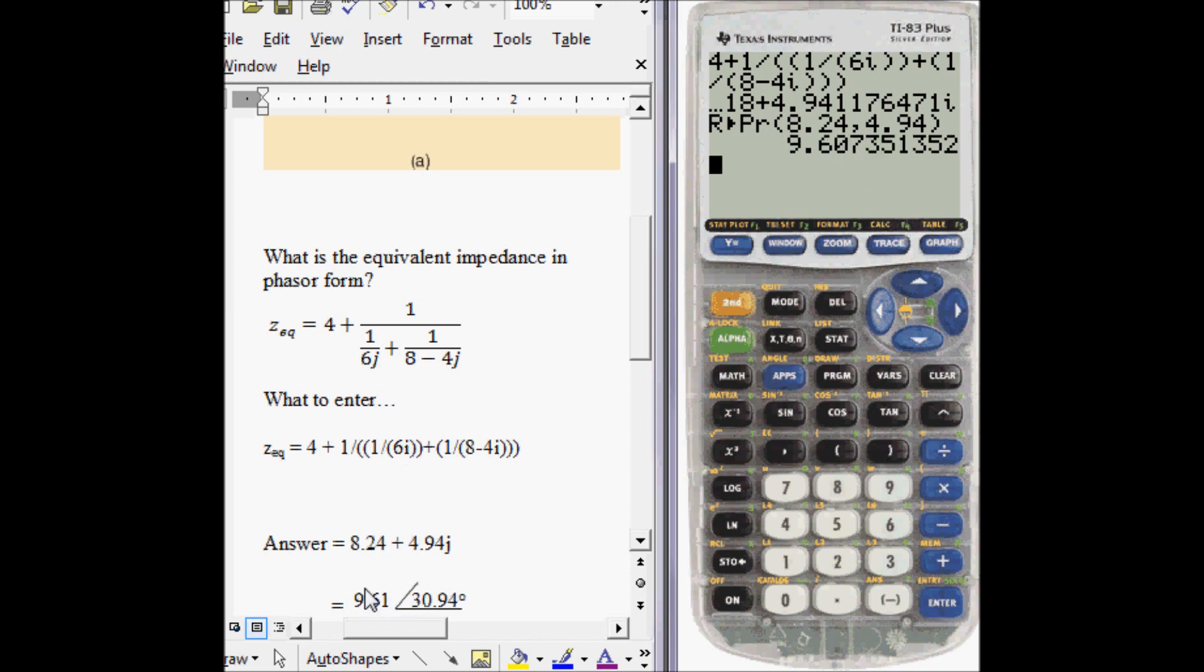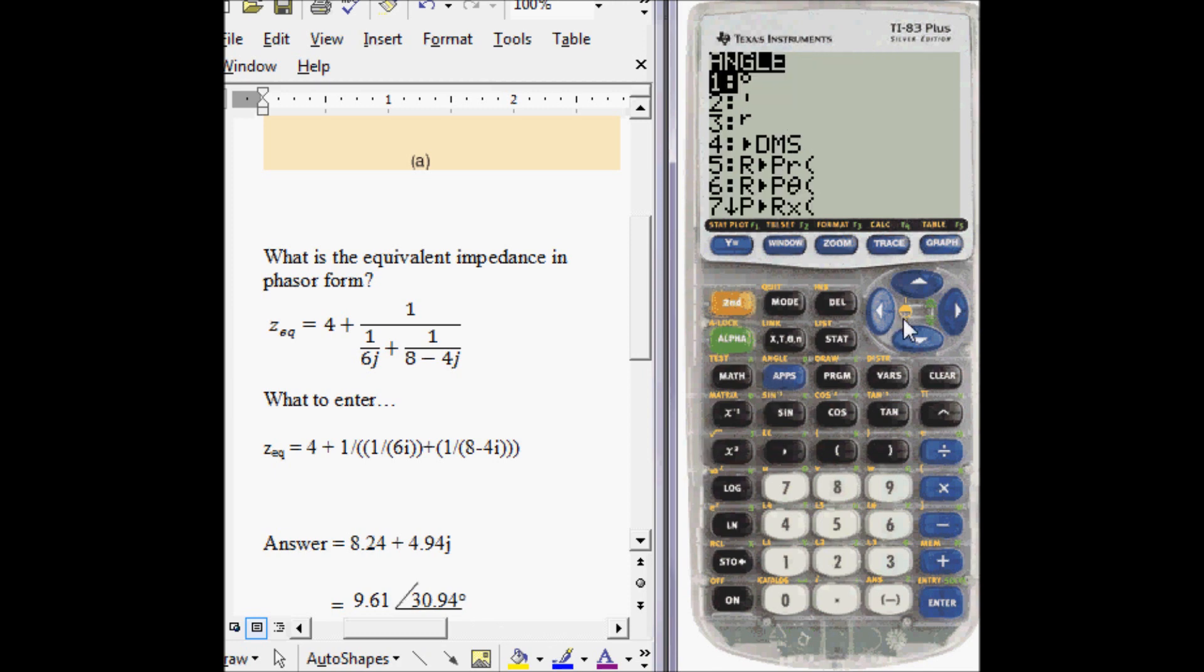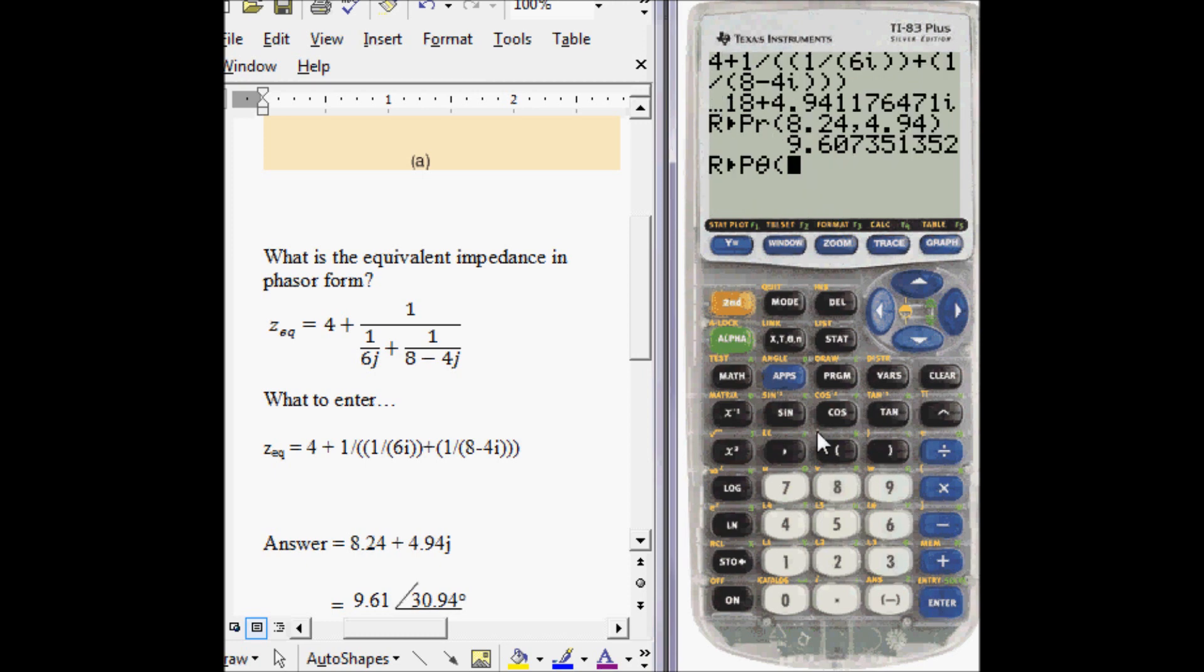And for the angle, the phase, go back to angle, choose the sixth option, and put in the same thing. 8.24, comma, 4.94, enter. It's in radians.